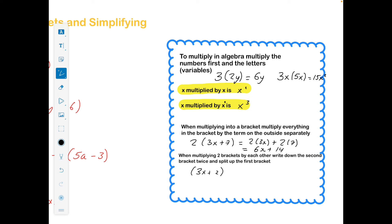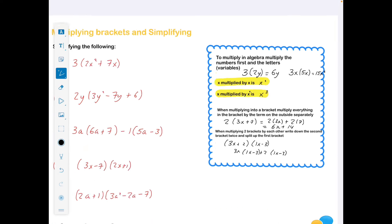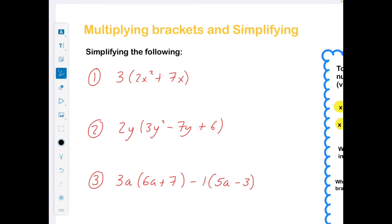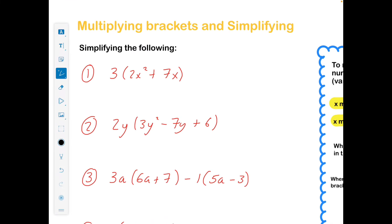When multiplying two brackets by each other, write down the second bracket twice and split up the first bracket. A quick example: 3x plus 2 and 1x minus 3. Write down the second bracket twice and split up the first bracket, then multiply it out from there. Those are your key rules — the bits you need to learn. Now we'll put that to practice.